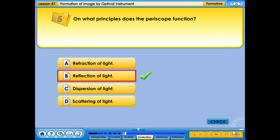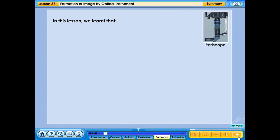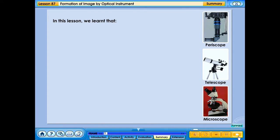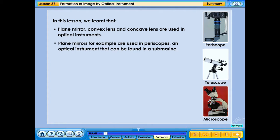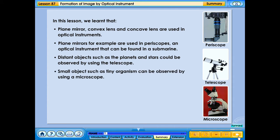Your answer is correct. In this lesson we learned that plane mirrors, convex lenses and concave lenses are used in optical instruments. Plane mirrors, for example, are used in periscopes, an optical instrument that can be found in a submarine. Distant objects such as the planets and stars could be observed by using the telescope. Small objects such as tiny organisms can be observed by using a microscope.